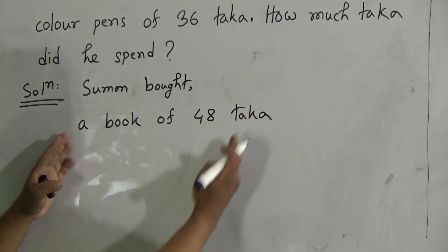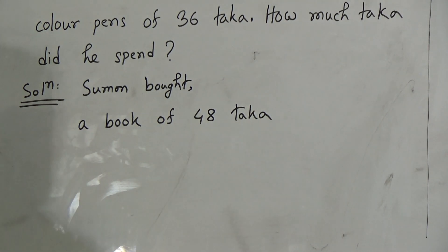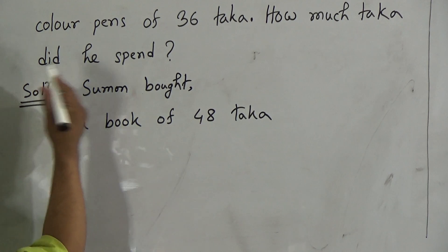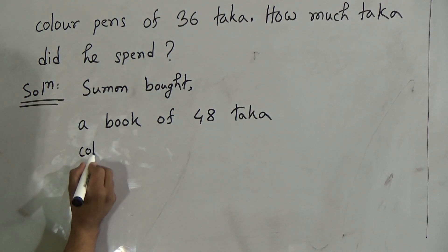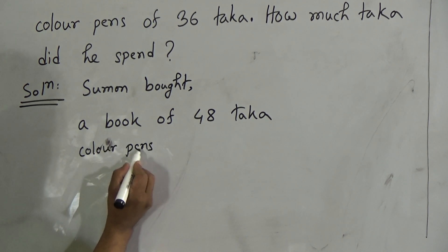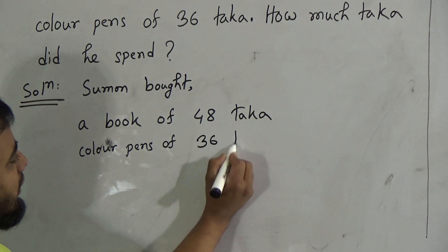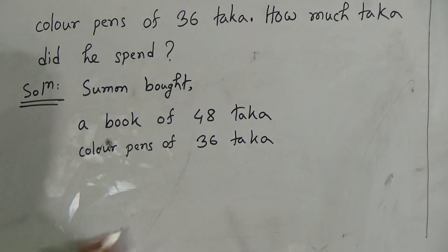You can continue this line in the left. That's why we will write down it sequentially. A book of 48 taka and color pens. Color pens of 36 taka. So, what I have written down here: Shuman bought, a book of 48 taka, color pens of 36 taka.